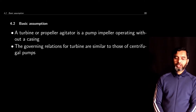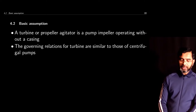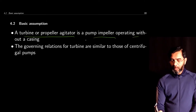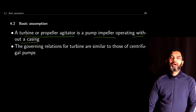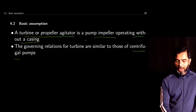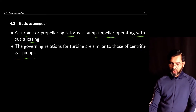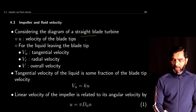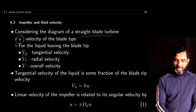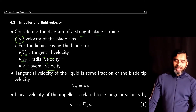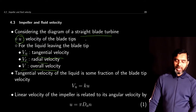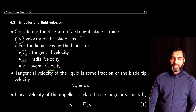In deriving the basic mathematical formulation for the impeller, some assumptions are made. A turbine or propeller agitator is treated as a pump impeller operating without a casing, so the theoretical development for pump impellers and governing equations for centrifugal pumps are used. The notations used are: u for the velocity of the blade tips, v_u for the tangential velocity of the liquid, v_r for its radial velocity, and v for its overall velocity.